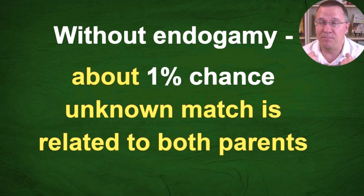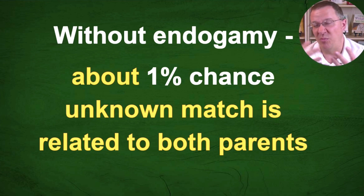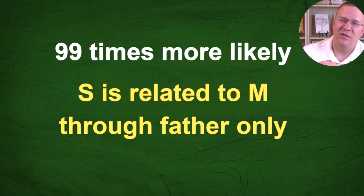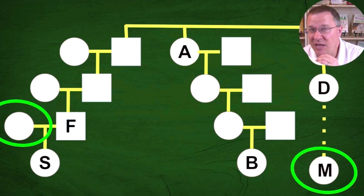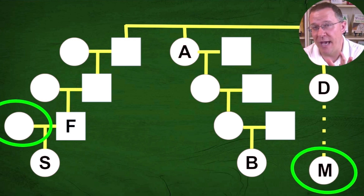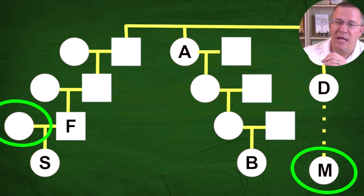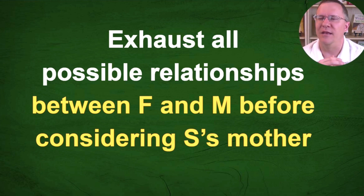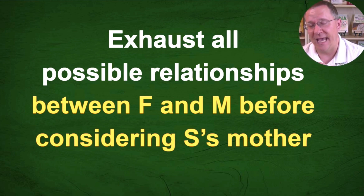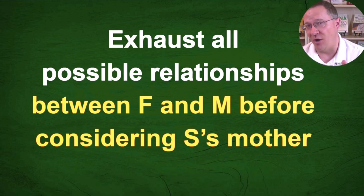Which leads us to question number two: how much more likely is one scenario? Without endogamy, based on my research on my own family and other people's families, only about 1% of matches are related to both sides of the family — 1% or less in many cases. That means it's 99 times more likely that S is related to M through her father only. From a priority standpoint, I'm not even going to worry about the mother relationship because S didn't share any DNA. I want to exhaust all possible relationships between F and M before even considering S's mother. The questioner asked: if S did have DNA, it would have to be through her mother since F didn't have it — and yes, that's correct. But since S didn't share any DNA, that question never came up at all.